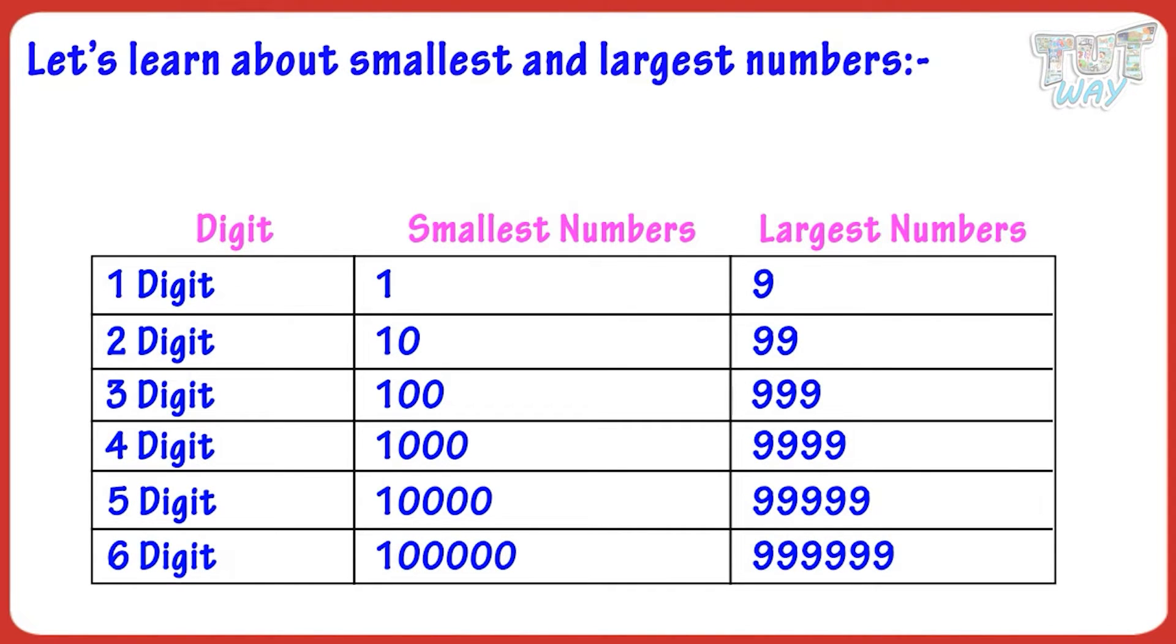Let's see an interesting thing. If you add 1 to the biggest one-digit number, you get the smallest two-digit number. That is, adding 1 to 9, you get 10.